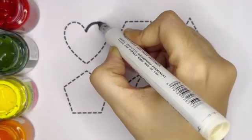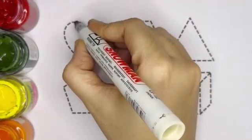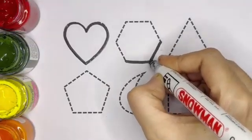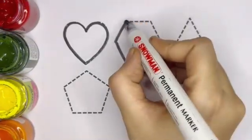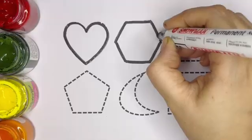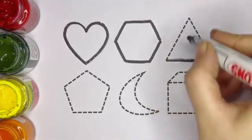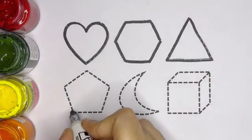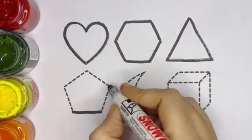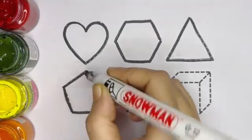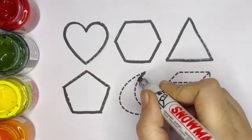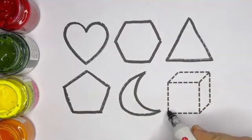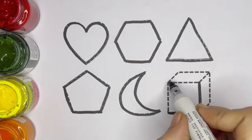Now, let's trace the shapes. Heart, this shape is called heart. Now, next is hexagon. This is hexagon. Triangle, this shape is called triangle. Pentagon, this is pentagon. Moon, this is moon. Cube, this is cube.